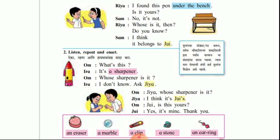Now let's read. Ria: I found this pen under the bench. Mala hai pen baaka khali sa padle. It is yours. He tujhe ahe ka? No, it's not. Nahi, te maje nahi.